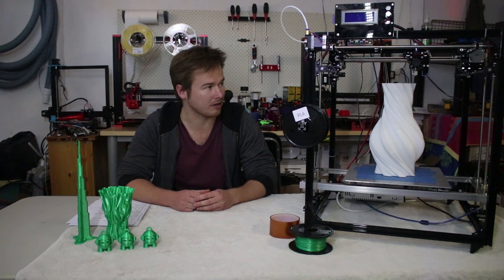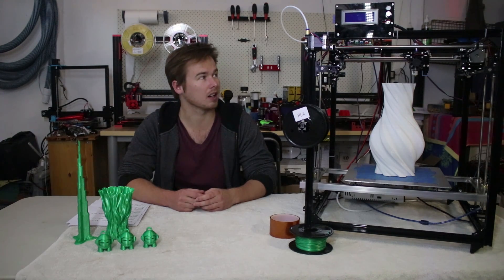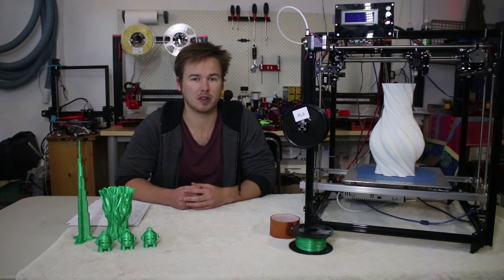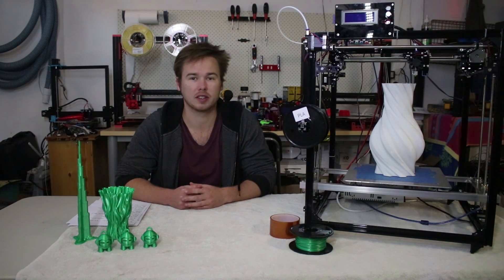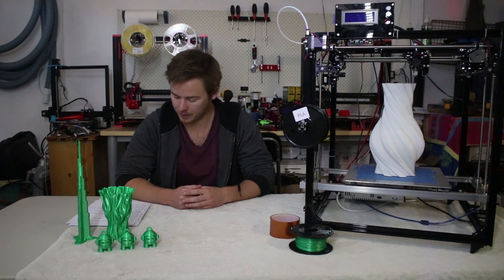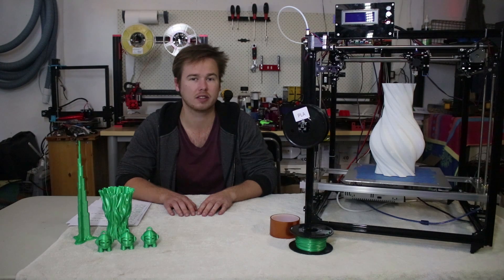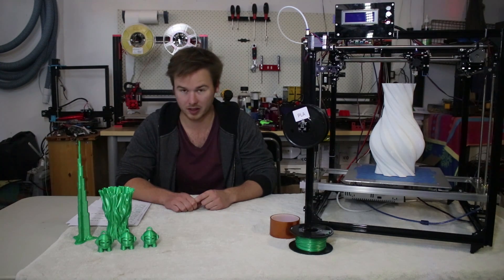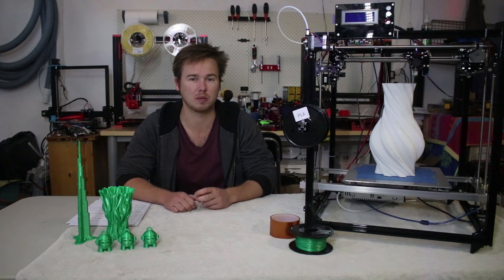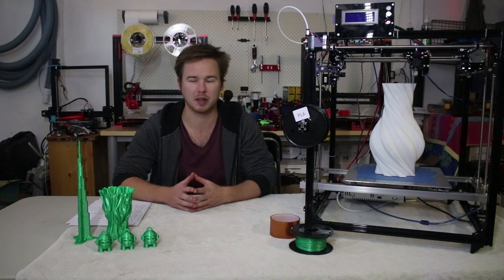It comes with an E3D clone V6 with a 0.4mm nozzle. It's got a Bowden extruder setup and the control board is an MKS based version 1 running Marlin RC7. It does come with an inductive sensor with an acrylic mount to mount it next to the hotend, which enables you to use the auto bed leveling feature in Marlin. And the whole printer is powered by a 12 volt power supply.